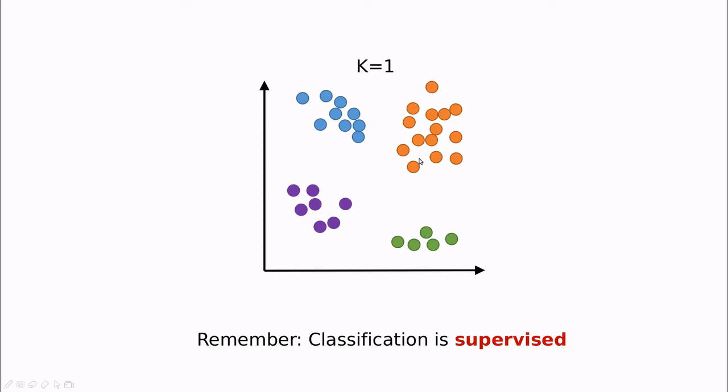In this example here, we have four classes in different colors. So let's get started. Imagine that we have a new observation that we want to classify. In this case, we have this red star, and we want to know to which class this belongs.